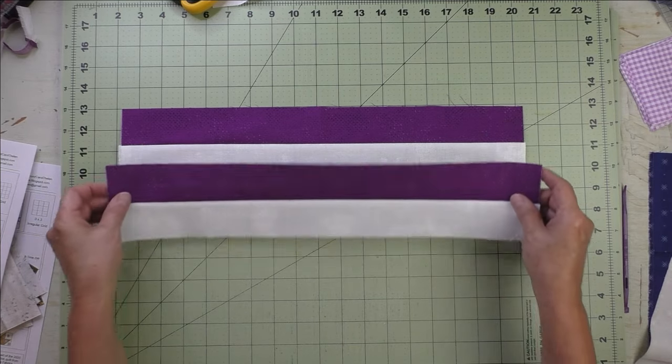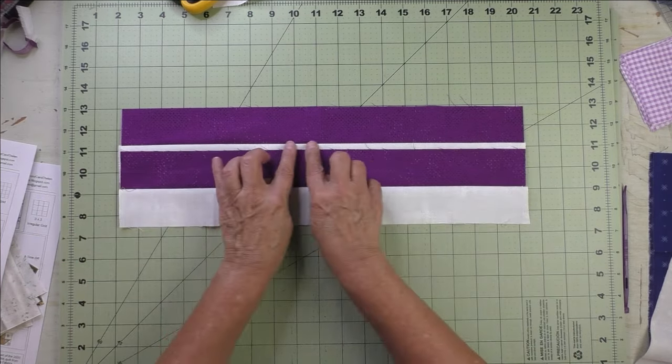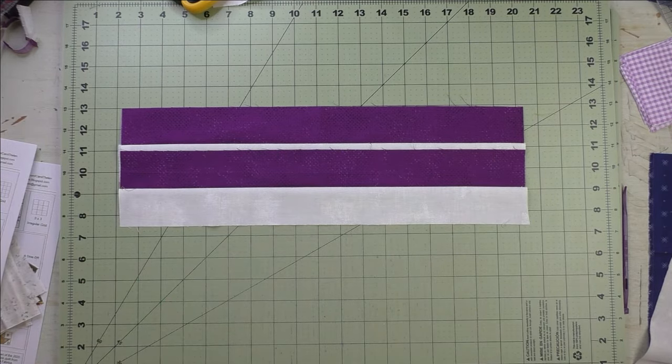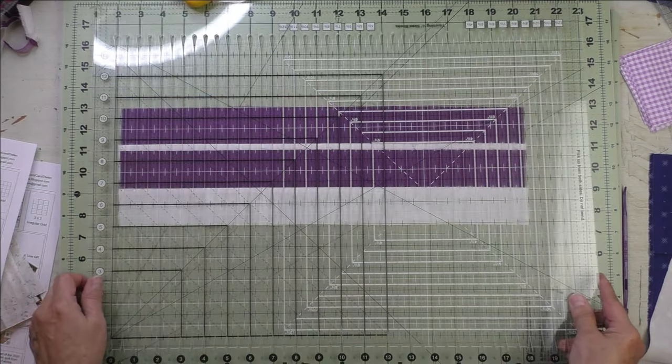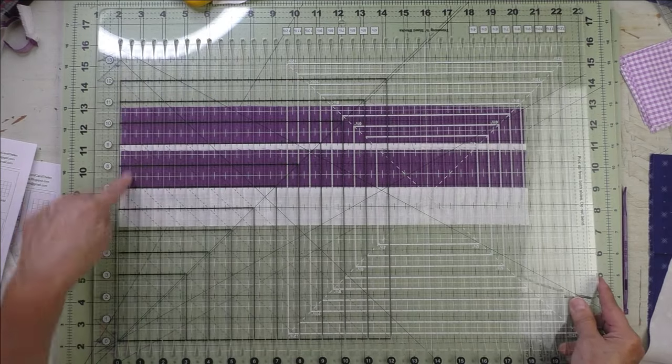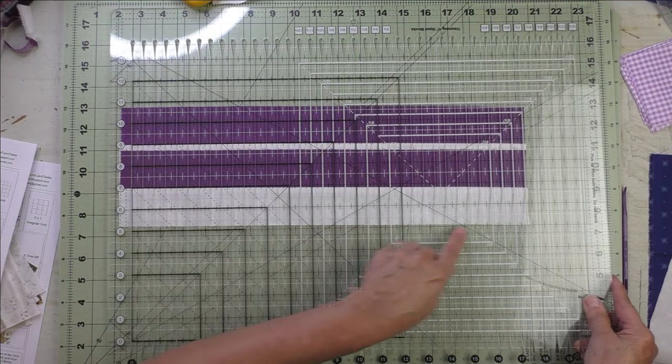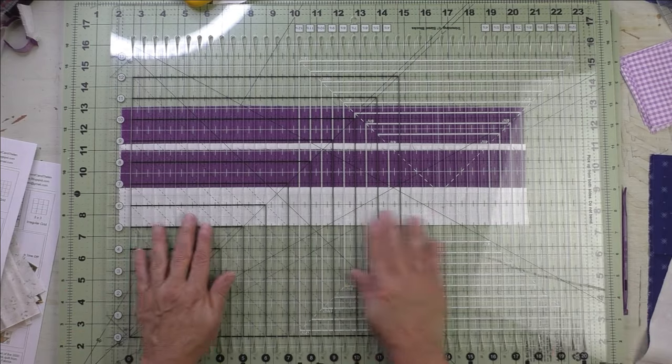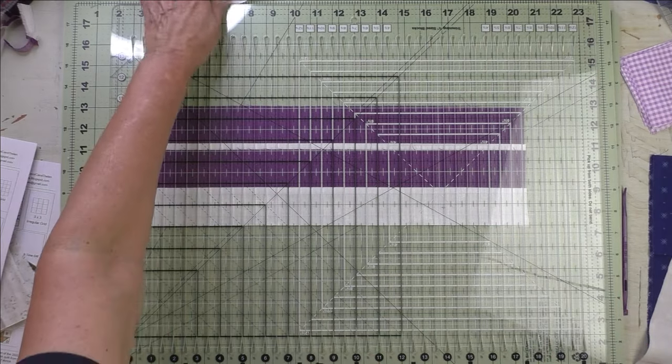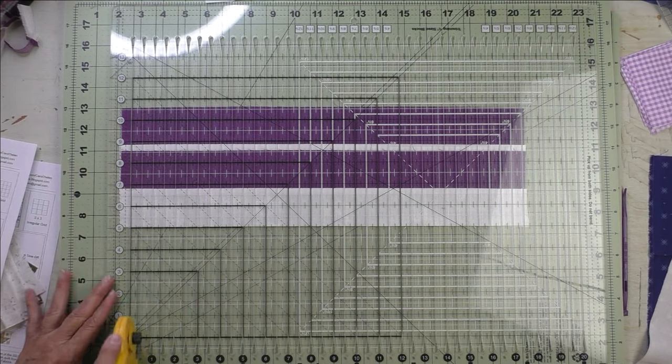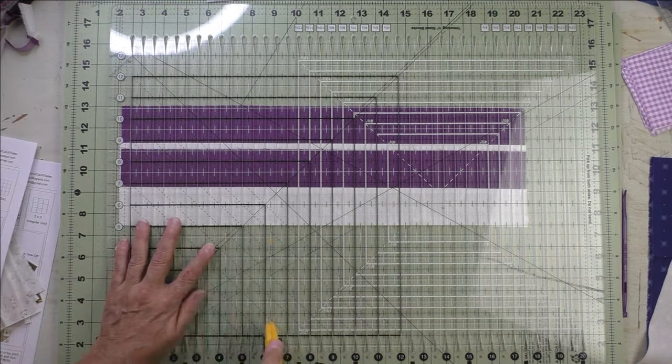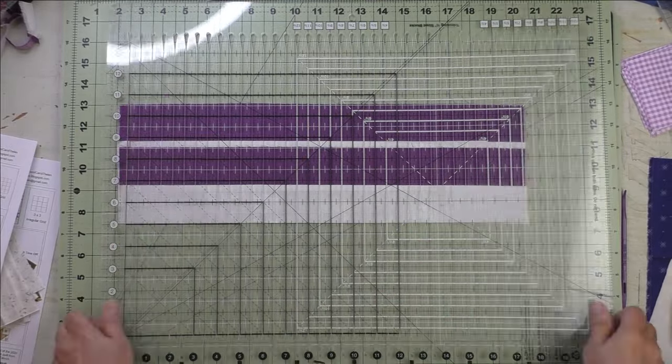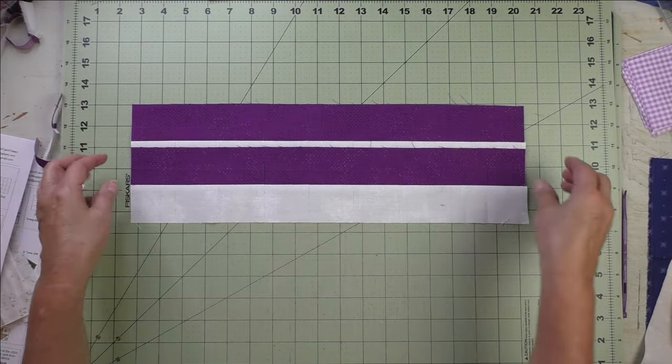So what I'm going to do is stack these slightly. I'm not going to stack over any seam lines and I'm going to use my Stripology ruler. You lay the ruler on top. I'm going to cut off this selvage edge, so I need to move it over some. Then I'm lining up one of the lines at the bottom of the fabric, and now we're going to cut two inch segments, 16 of them.